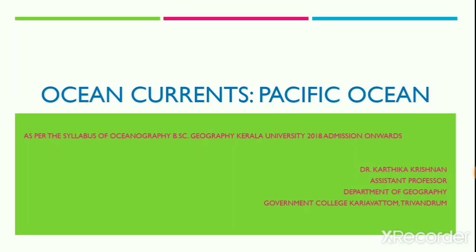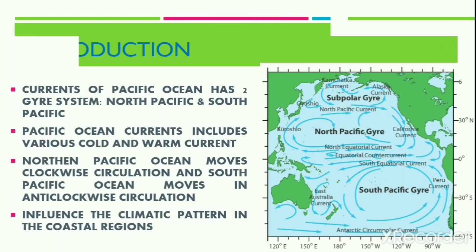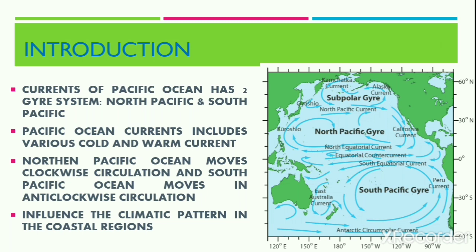Hello everyone. Welcome back to Oceanography. In the last session, we were discussing the ocean currents and the various factors responsible for the formation, movement, and direction of these currents. In the upcoming sessions, we will be discussing the major currents that occur in the world oceans. Today, we are going to discuss the currents of the Pacific Ocean. The currents of the Pacific Ocean have two gyre systems: the North Pacific gyre and the South Pacific gyre system.